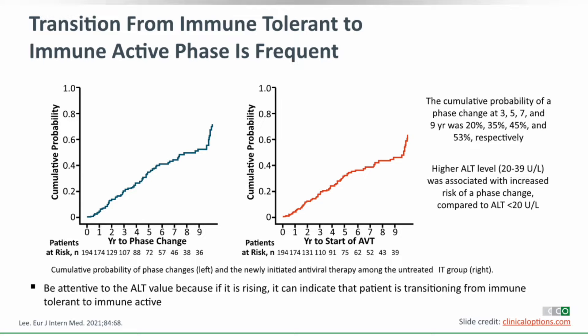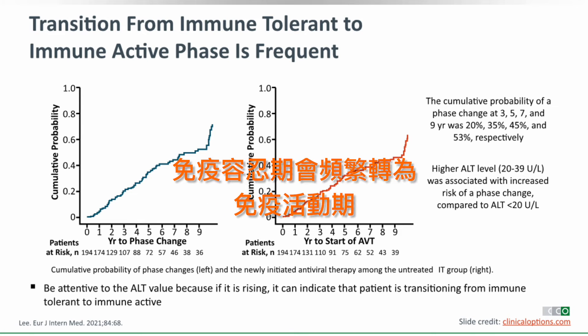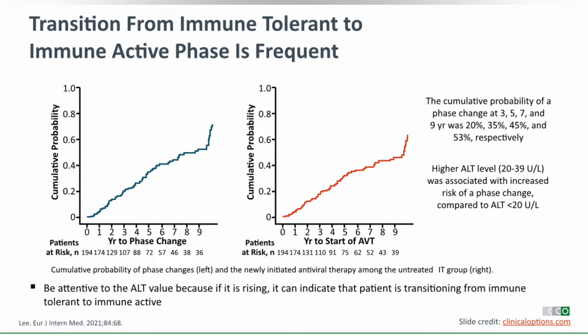While a patient may be immune-tolerant today, they can transition to a more active phase of disease. You may choose not to treat today, but you need to monitor carefully because they can evolve. One study shows the cumulative probability of transition over three, five, seven, and nine years — and by a decade, more than half have transitioned into the immune-active phase.